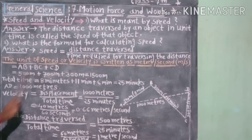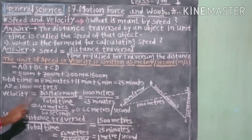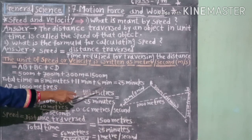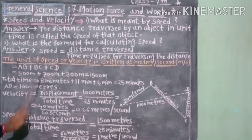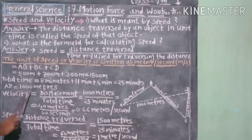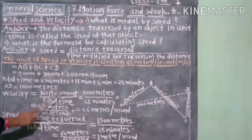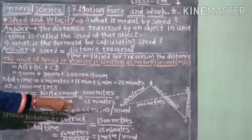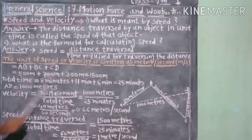Ranjit's displacement from home to school: AD is equal to 1,000 meters. रंजितचे घरापासून शाळेपर्यंत झालेले विस्थापन 1,000 meters.